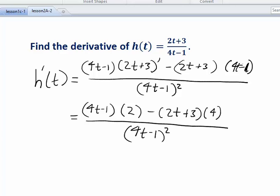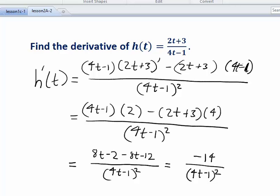Now, you could actually expand and simplify the numerator if you want. Completely simplifying would give you the answer negative 14 divided by 4t minus 1 quantity squared. That's the derivative of the function we started with.